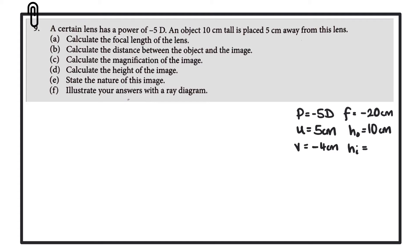So far we know that the power of the lens is minus 5 diopters, and we worked out that the focal length is minus 20 centimeters. We have an object distance of 5 centimeters and an image distance of minus 4 centimeters — the minus just meaning that it's on the same side of the lens as the object. We have the height of the object as 10 centimeters, and the height of the image we still don't know.